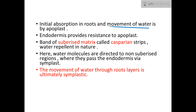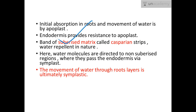As a whole, initial absorption in the root is by apoplast, because the cortical cells are loosely bound and have a lot of intercellular spaces. But when it comes to the endodermis, it provides resistance to apoplast. There are two reasons: first, the cells over the endodermis are very tightly packed with little intercellular space; and second, there is a band of suberized matrix called Casparian strips, which are water-repellent in nature.